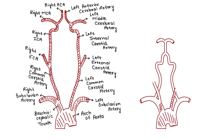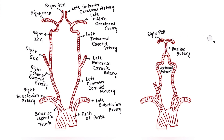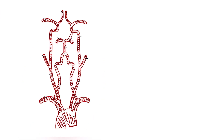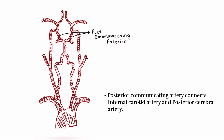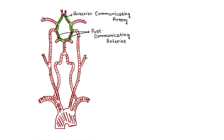Now for the vertebral artery. The vertebral artery is a branch of the subclavian artery. Vertebral arteries from each side join together to form the basilar artery. The basilar artery then terminates by dividing into right and left posterior cerebral arteries, which form the posterior part of the Circle of Willis. Both systems are connected by posterior communicating arteries — one on each side — connecting the internal carotid artery to the posterior cerebral artery, and one anterior communicating artery joining both anterior cerebral arteries. That's how the Circle of Willis gets formed.